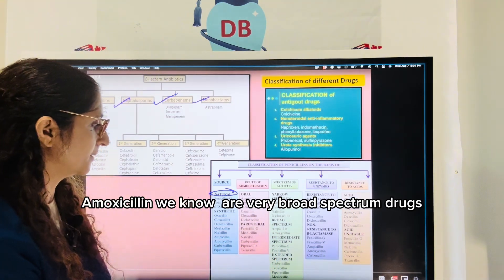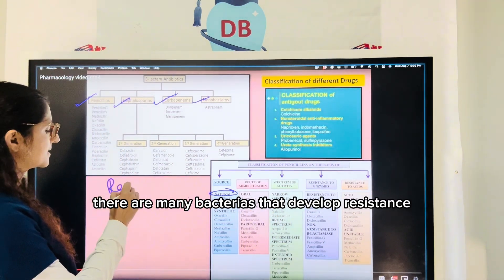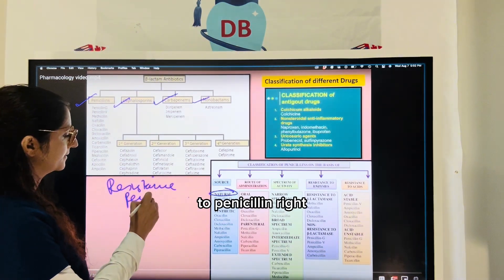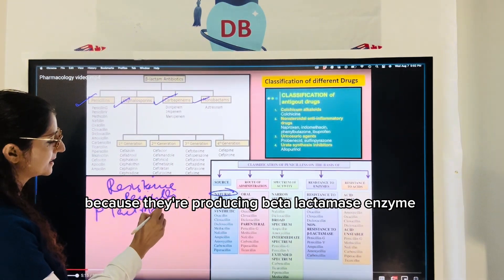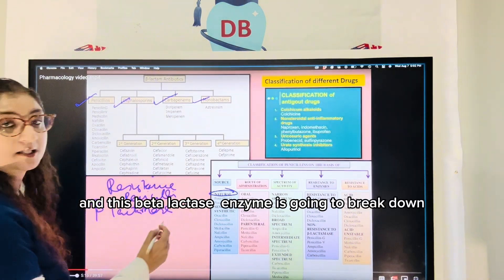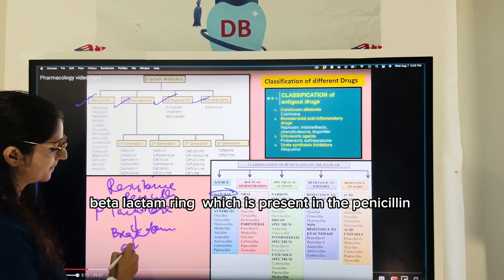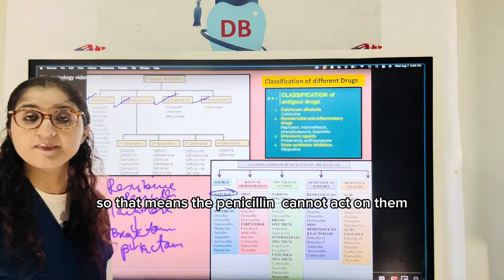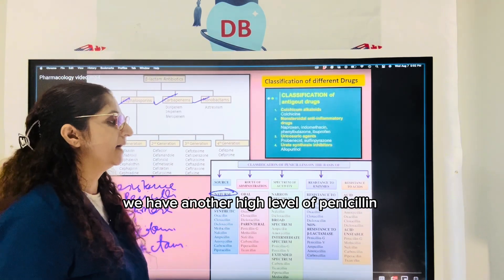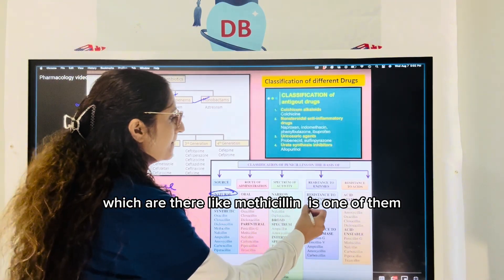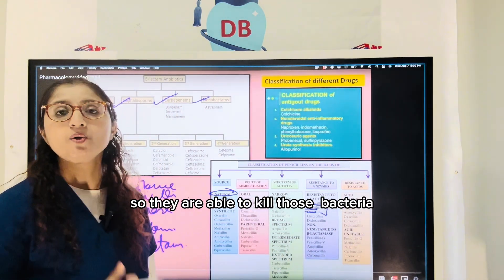Many bacteria develop resistance to penicillins because they produce the beta-lactamase enzyme, which breaks down the beta-lactam ring in penicillins, so the drug cannot act on them — these become beta-lactamase resistant bacteria. To kill those bacteria, we have higher-level penicillins like methicillin, nafcillin, and oxacillin, which are beta-lactamase resistant penicillins and are able to kill bacteria that produce the beta-lactamase enzyme.